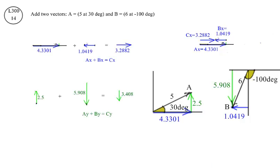Adding the vertical components exactly the same way. AY is 2.5 up. BY is 5.9 down. The sum of those two vectors is 3.4 down.